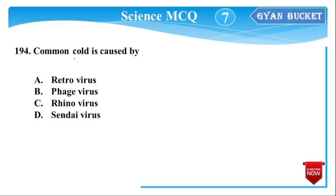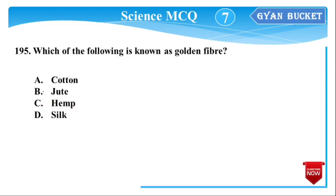Next question: Common cold is caused by the Rhinovirus — option C. Next question: Which of the following is known as golden fiber? Golden fiber refers to jute.